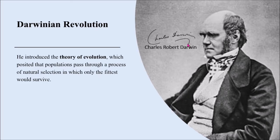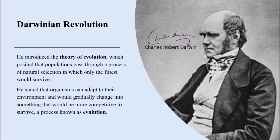The theory posited that populations pass through a process of natural selection in which only the fittest would survive. He stated that organisms can adapt to their environment and would gradually change into something that would be more competitive to survive. This process is known as evolution. And his book is the Origin of Species.